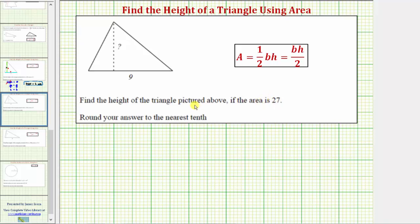The area formula for a triangle is area equals one-half base times height, where for the pictured triangle, the base is this side here that has a length of nine units,